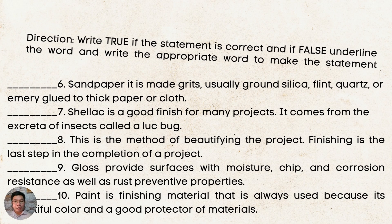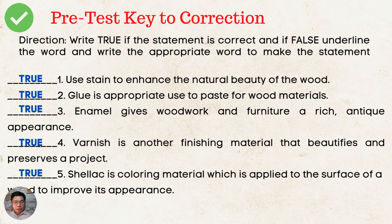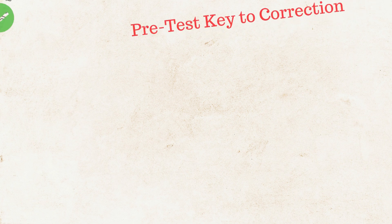Here is the pre-test correction. 1. Use tint to enhance the natural beauty of the wood. 2. Glue is appropriate to use to paste for wood materials — true, it is wood glue. 3. Enamel gives woodwork and furniture a rich antique appearance — true. 4. Varnish is another finishing material that beautifies and preserves a project — true. 5. Shellac is a coloring material which is applied to the surface of a wood to improve its appearance — the answer is true.